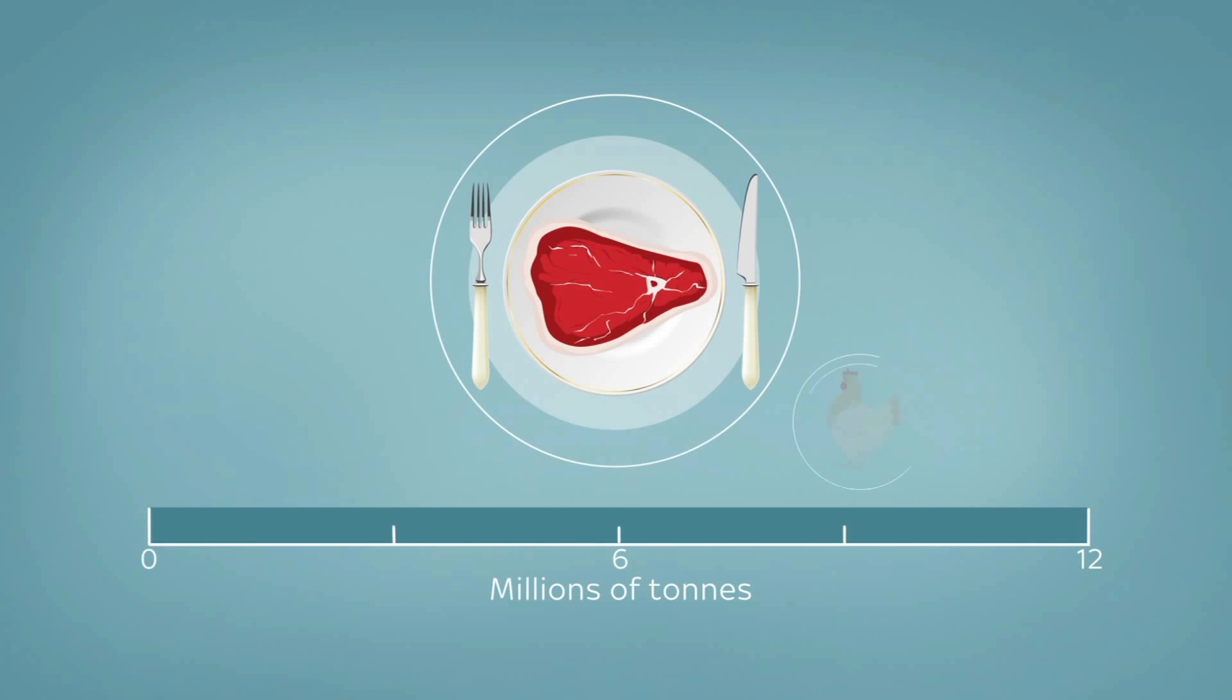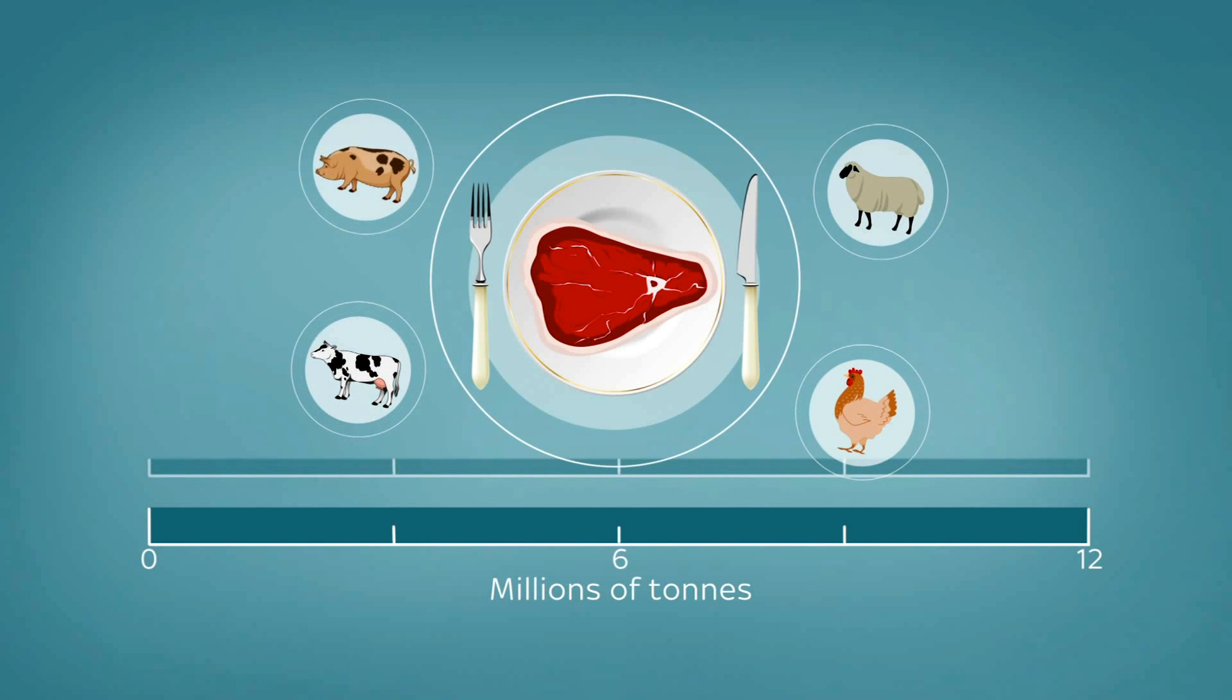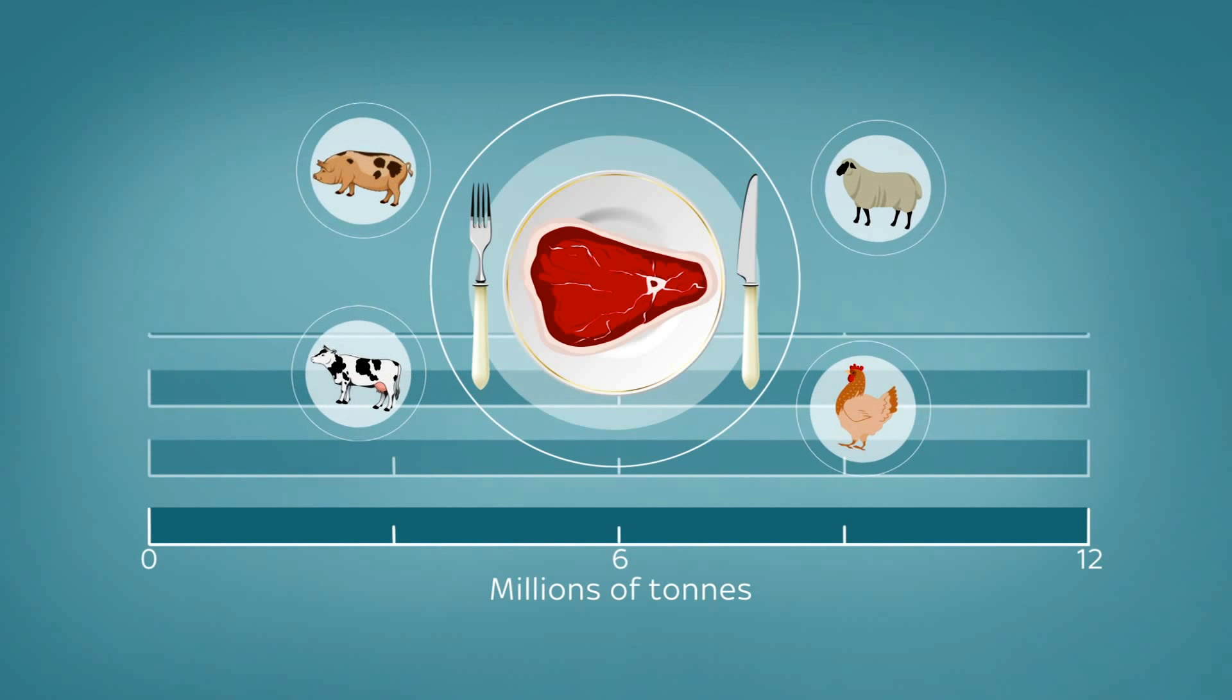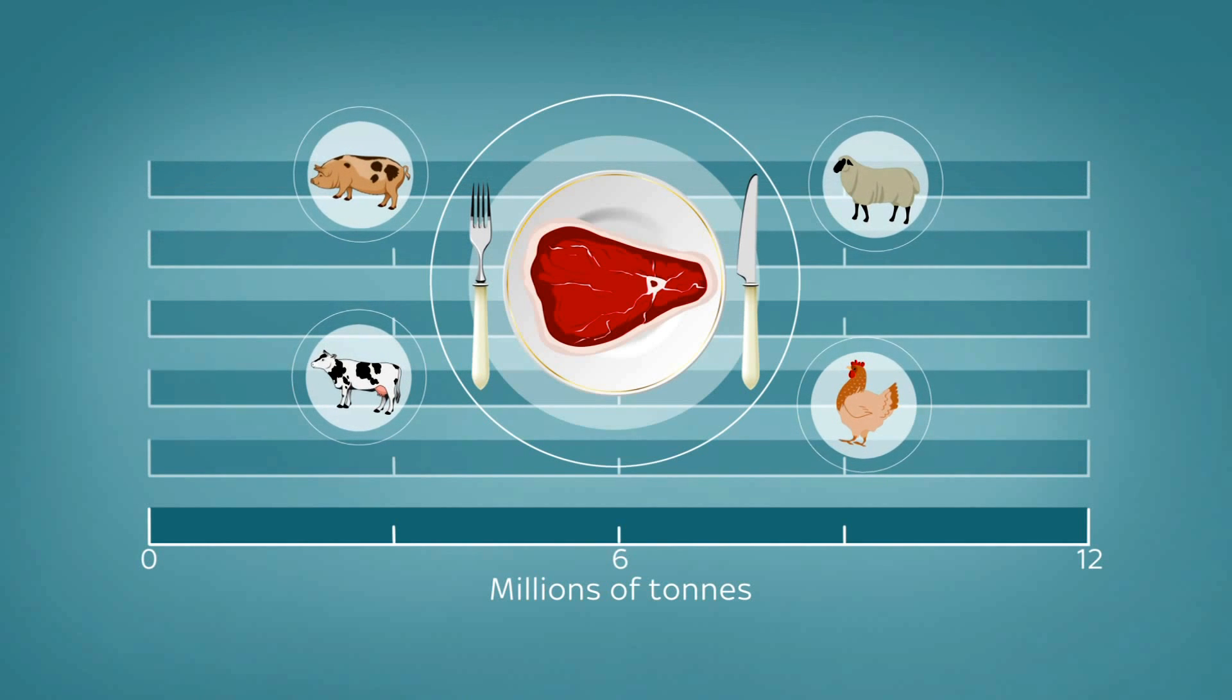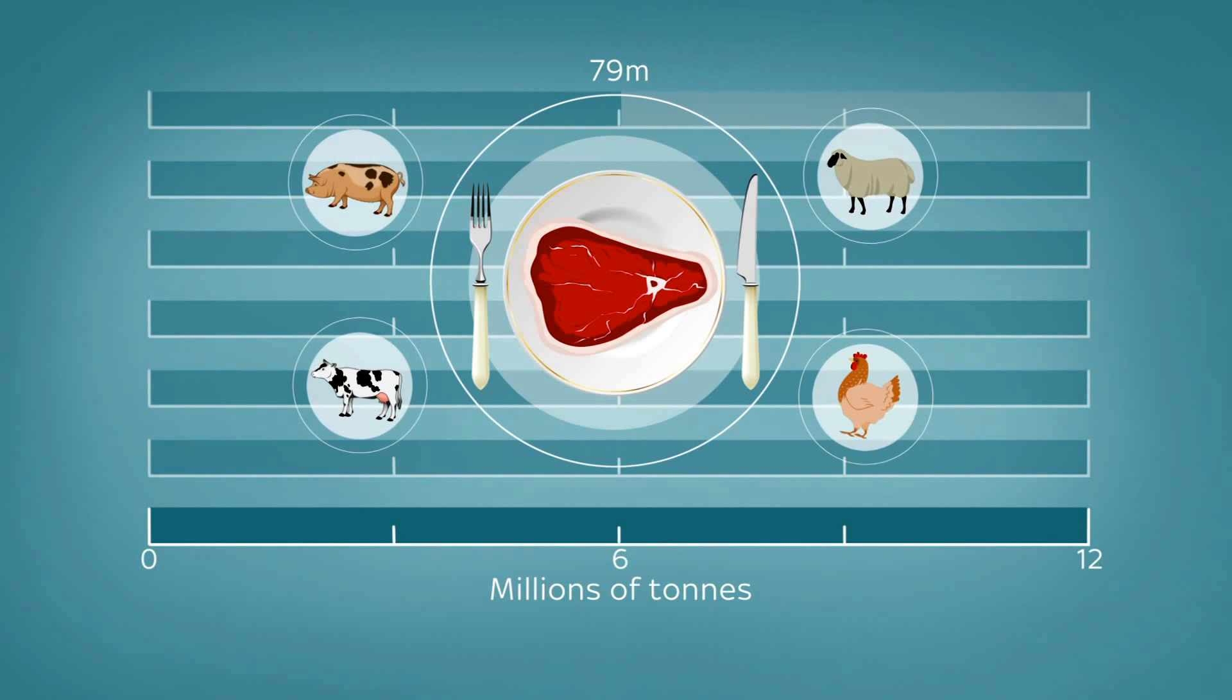If you don't fancy that, what about giving up meat? If you went veggie, you'd save 1,241 kilograms of CO2 per year. If the whole country did it, we'd save 79 million tonnes of CO2, more than 16% of our total carbon emissions. Too drastic?